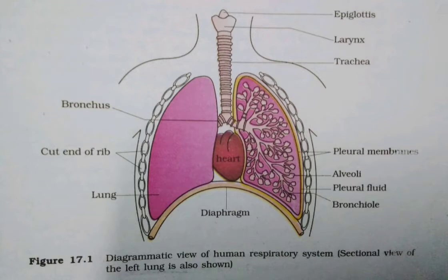The other steps involved are: exchange of O2 and CO2 between deoxygenated blood and alveoli; transport of these gases through the body by blood; exchange of O2 and CO2 between oxygenated blood and the tissues; and finally, the utilization of O2 by the cells — cellular respiration.